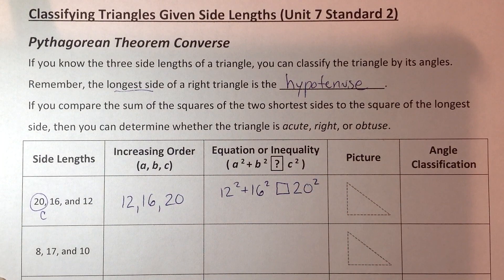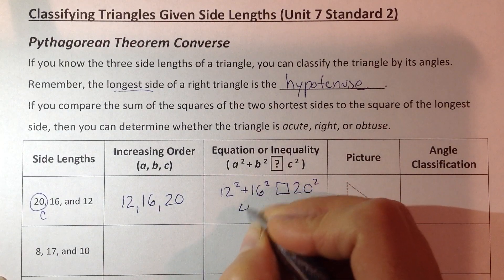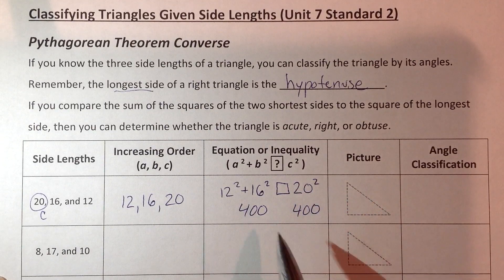Go ahead and put that on your calculator. 12 squared plus 16 squared, 20 squared. Put that in your calculator.